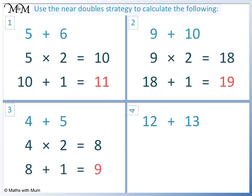Question 4. We double 12. 12 times 2 equals 24. 13 is 1 more than 12, so we add 1. 24 plus 1 equals 25.